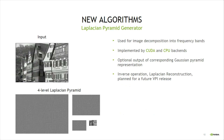The Laplacian Pyramid Generator is another algorithm implemented based on user requests. It's used for image decomposition into frequency bands, which is sometimes a required intermediate stage in more complex pipelines. VPI implements it on CUDA and CPU backends with optional output of the intermediate Gaussian pyramid representation. The inverse operation, Laplacian reconstruction, is planned for a future VPI release.